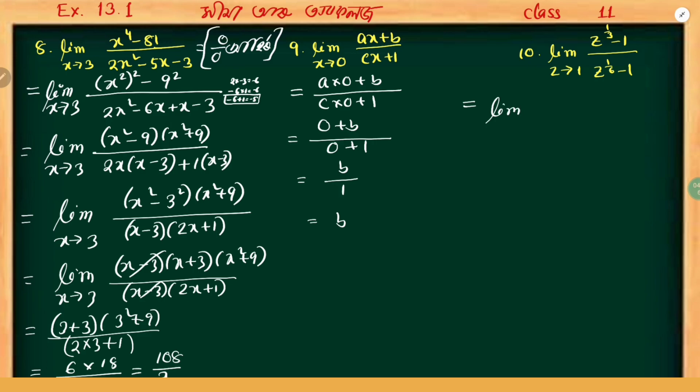Question 10: limit as z to the power 1 by 3 minus 1, z tends to 1, divided by z to the power 1 by 6 minus 1. When I substitute 1, both numerator and denominator give 0, so we get 0 by 0 form. We need a different method.